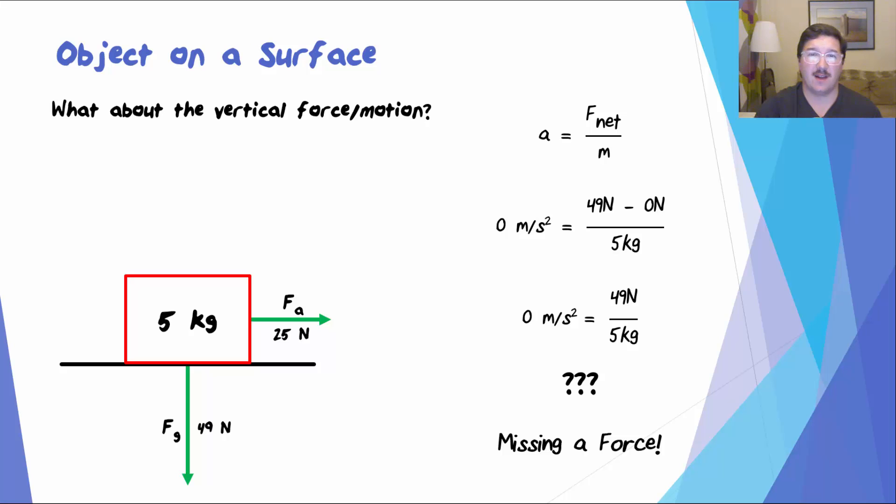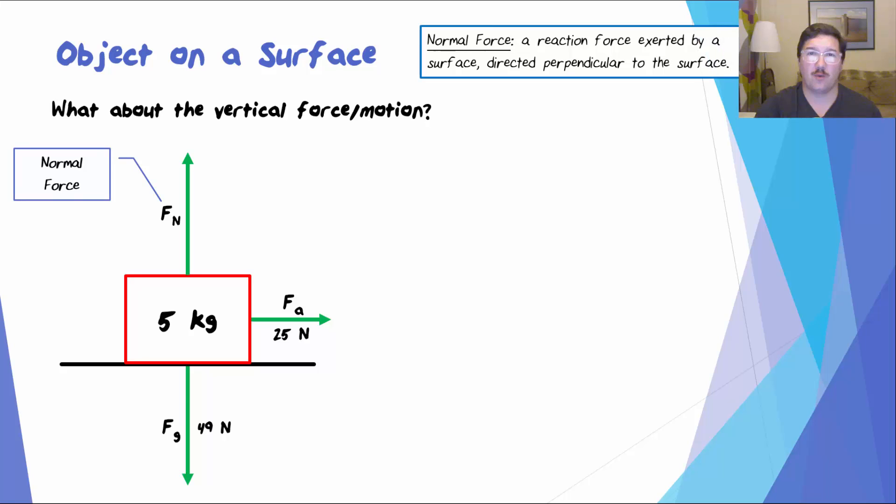According to Newton's third law, if the weight of the crate is pushing down onto the surface, then the surface must be exerting a force upward on the crate. We call this the normal force. The normal force is a reaction force that's exerted by a surface, and it's directed perpendicular to the surface.